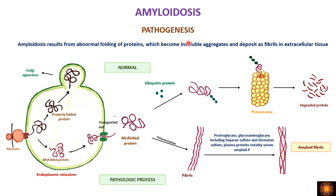Amyloidosis means the deposition of abnormally folded or misfolded proteins. Normally, misfolded proteins are removed or degraded by the ubiquitin proteasome pathway. The misfolded proteins produced are attached to ubiquitin molecules in the cytoplasm, and ubiquitin directs them into the proteasome where they are degraded.